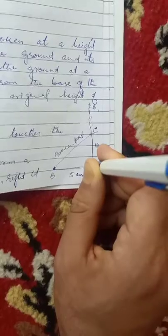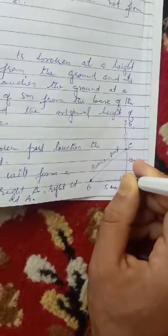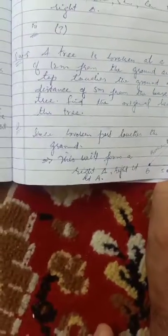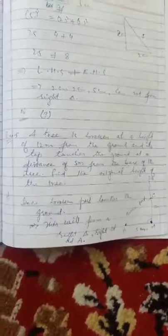The line forms a right angle triangle. That's question number 5, Exercise 6.5. Inshallah, you will see in the next lectures. Peace be upon you.